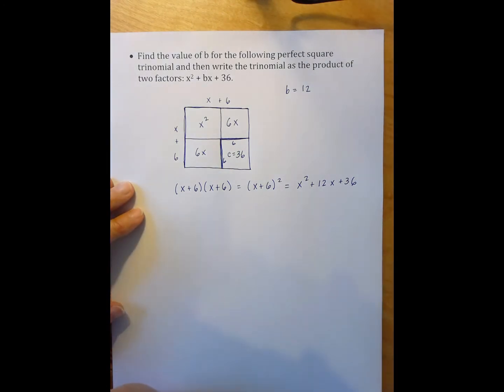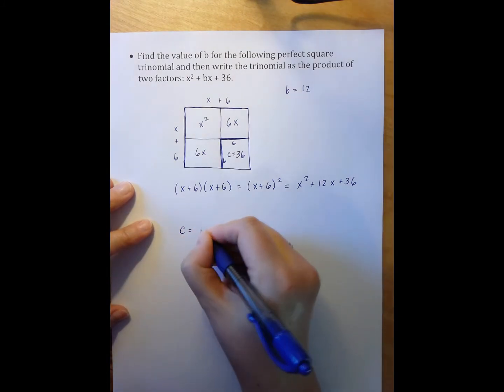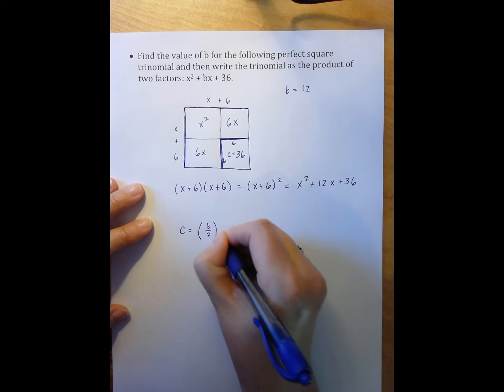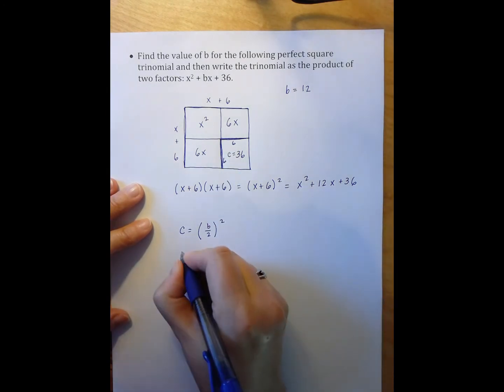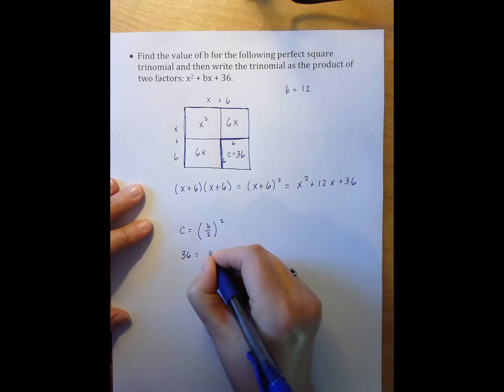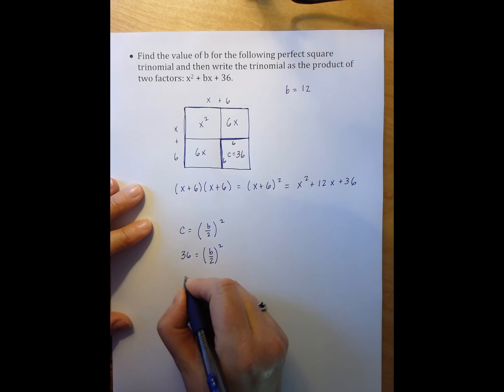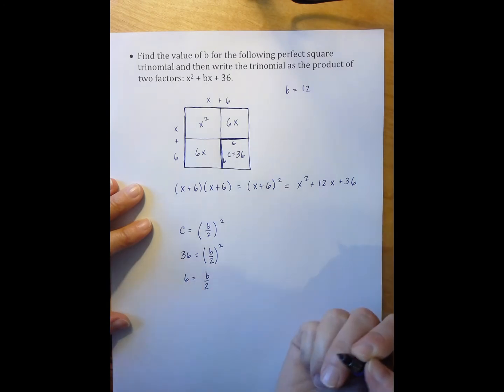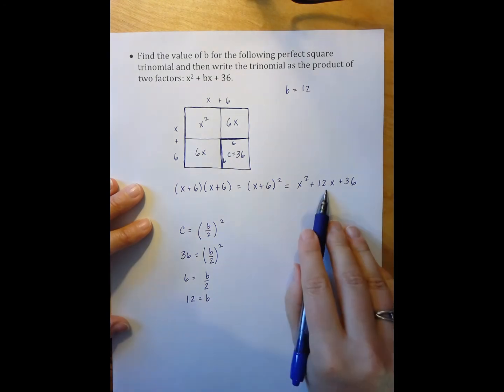So now let's do it using the other method. The other method tells me that my C value is going to be my B split into two piles squared. In this case I'm given my C value. So I have 36 equals B over 2 quantity squared. So I'm going to take the square root of both sides, which means that I have 6 equals B over 2. Multiply both sides by 2, and I get 12 equals B. So exactly what I have up here.